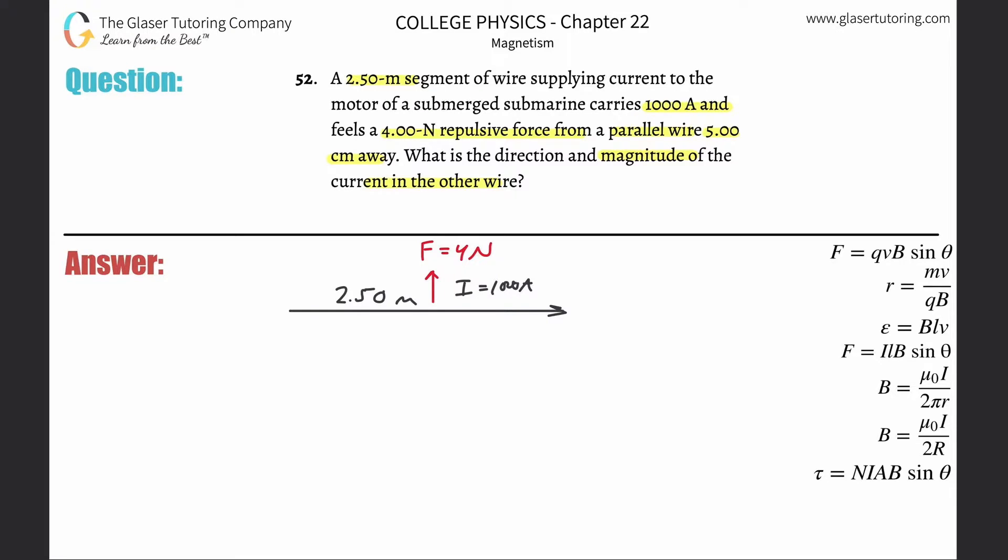And it tells you that there's another parallel wire 5 centimeters away. So in other words, here, let's say that this represents 5 centimeters, which you know we need that in meters, so just 0.05 meters.